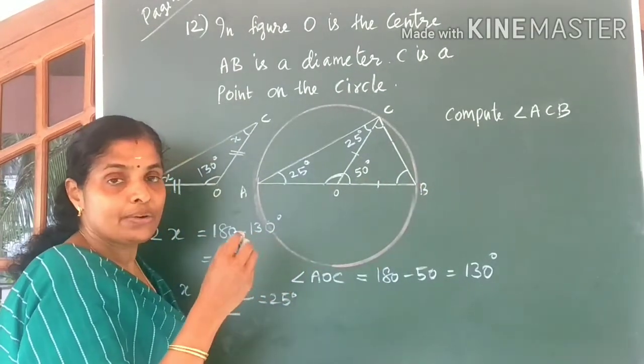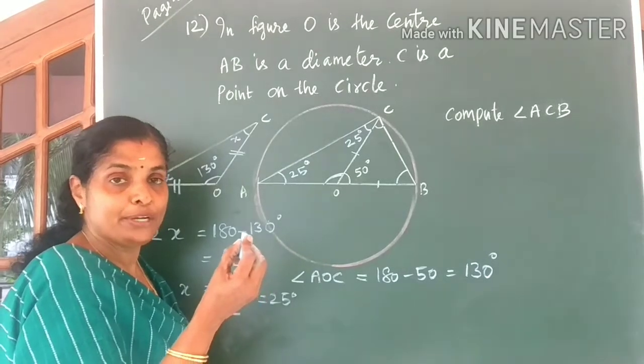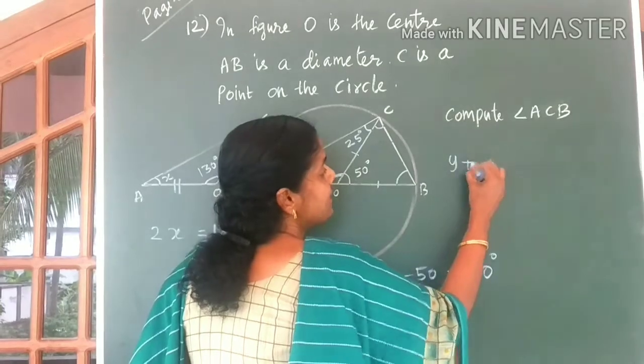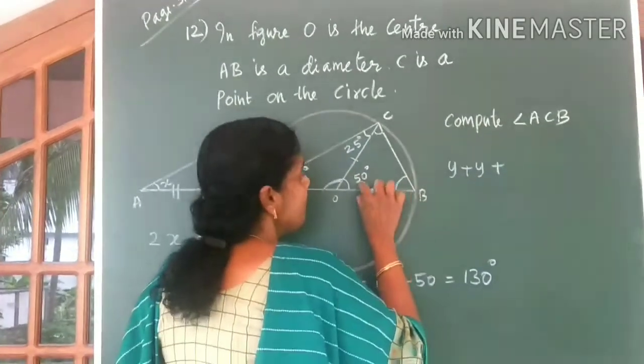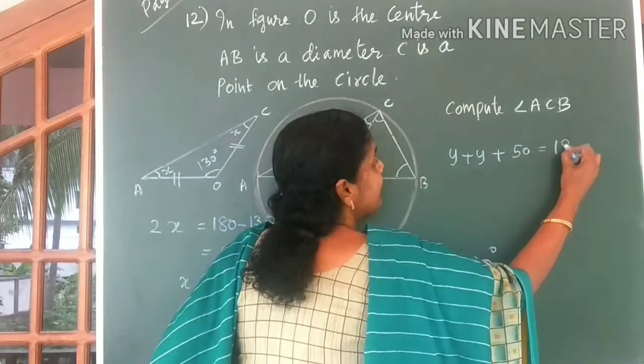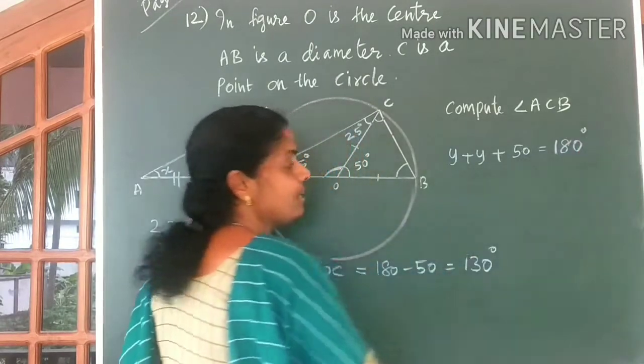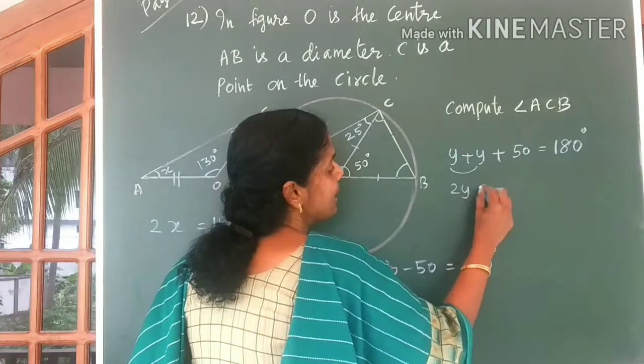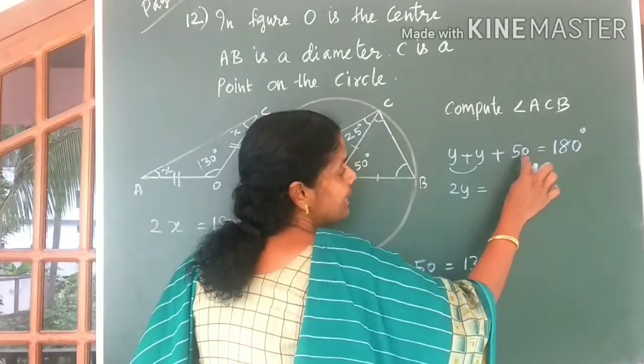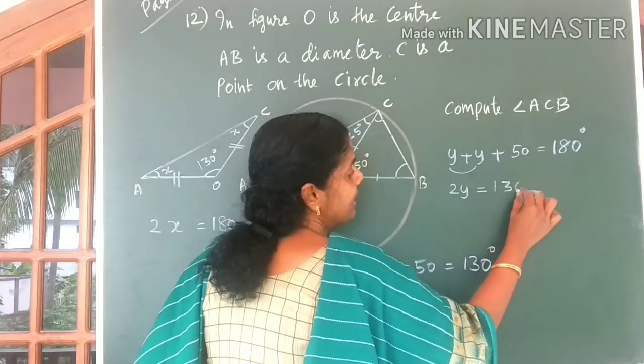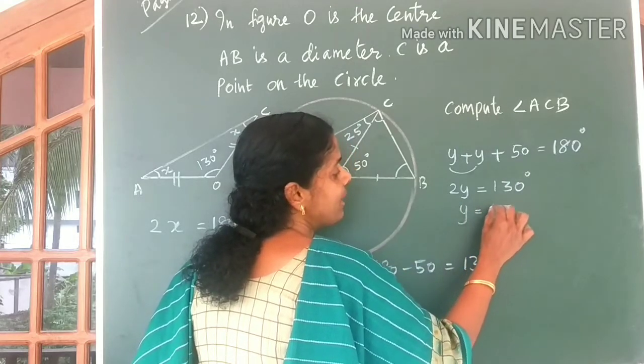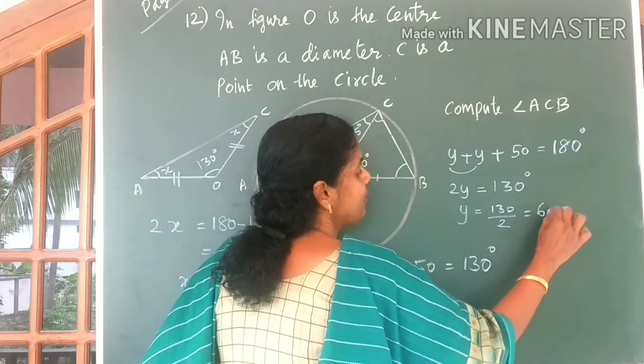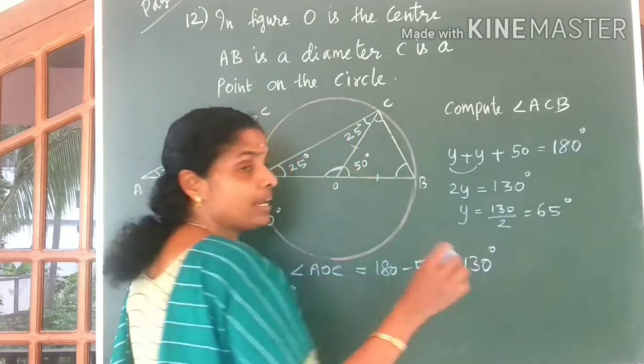If you want, you can take the angle to be equal to Y. Okay, so you will get Y plus Y plus 50 degrees is equal to 180 degrees. That means Y plus Y, 2Y is equal to 180 minus 50, 130 degrees. So what is angle Y? 130 divided by 2, that is equal to 65 degrees.